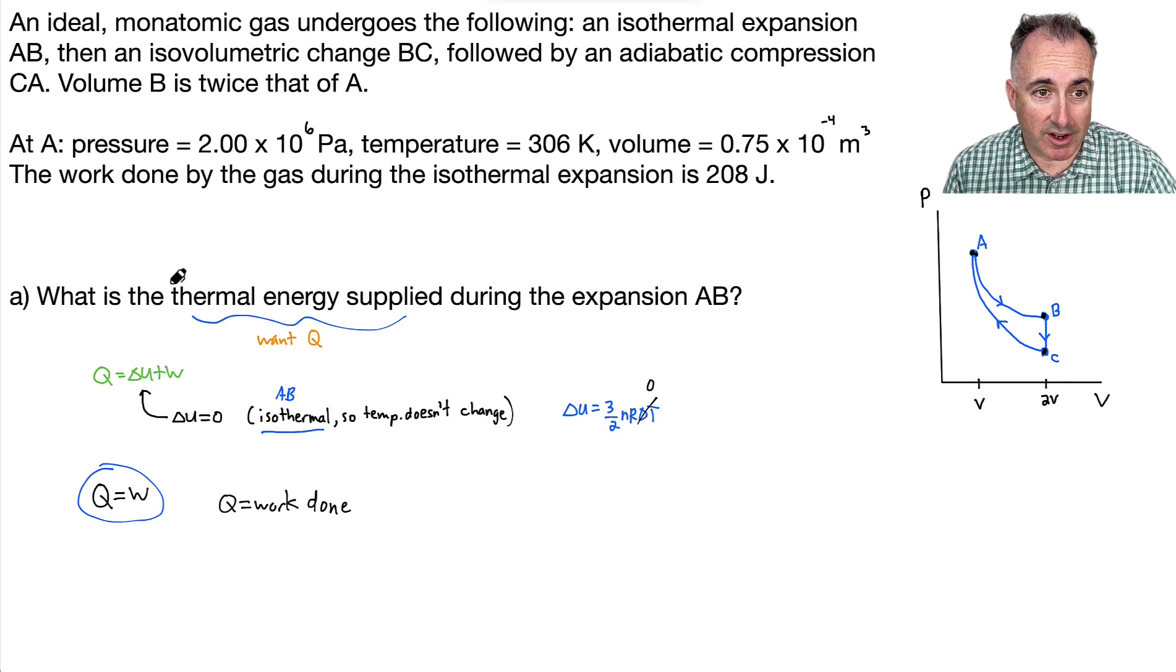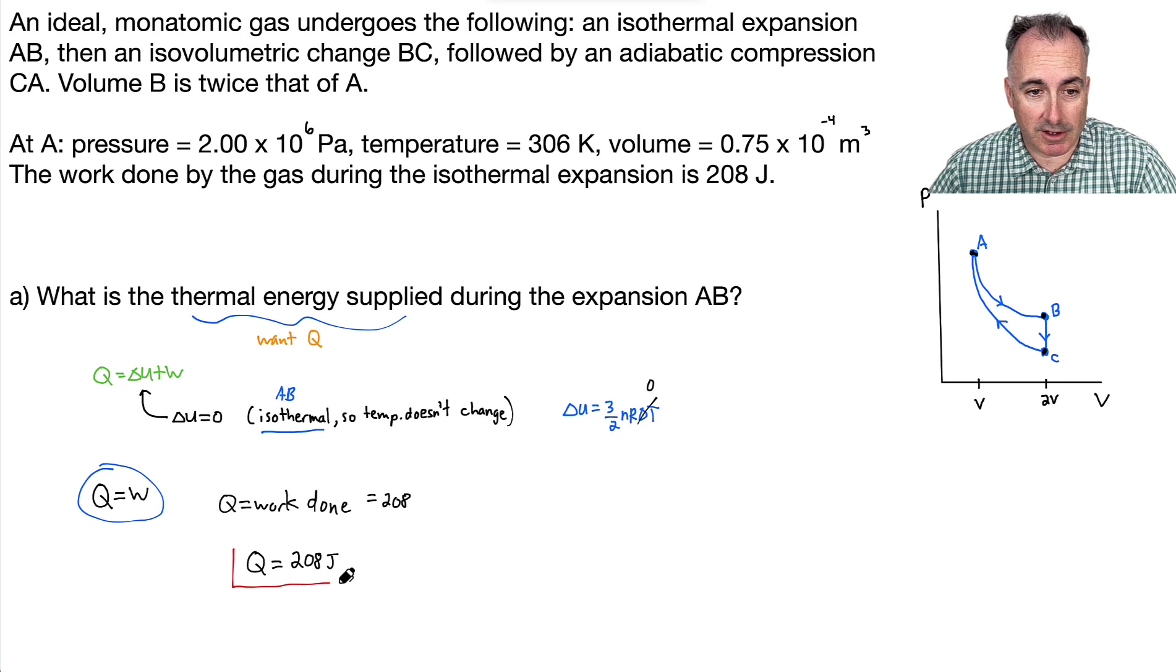And what does that mean? Well, we already know the work done, don't we? They told us that the work done by the gas during the isothermal expansion is 208 joules. So that means then it's just going to be 208. And that's it. So that means what? That means that we can actually state then without a doubt, then the Q then is just going to be equal to 208 joules. And we're done. Yay. So that's the first part. That's part A finished.